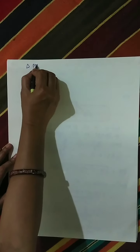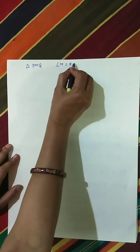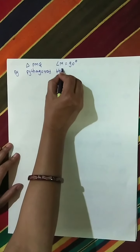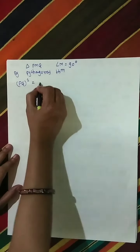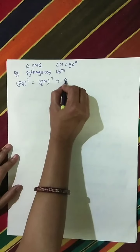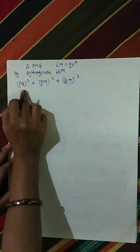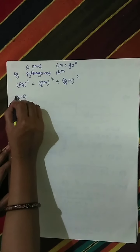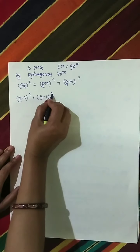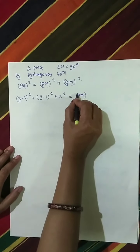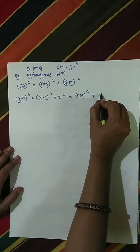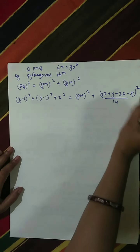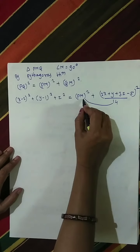In triangle PMQ, angle M equals 90 degrees, so by Pythagoras theorem: PQ squared equals PM squared plus QM squared. Substituting the values of PQ and QM, where PM is the radius: (x minus 2) squared plus (y minus 1) squared plus z squared equals PM squared plus (2x plus y plus 3z minus 5) squared divided by 14.